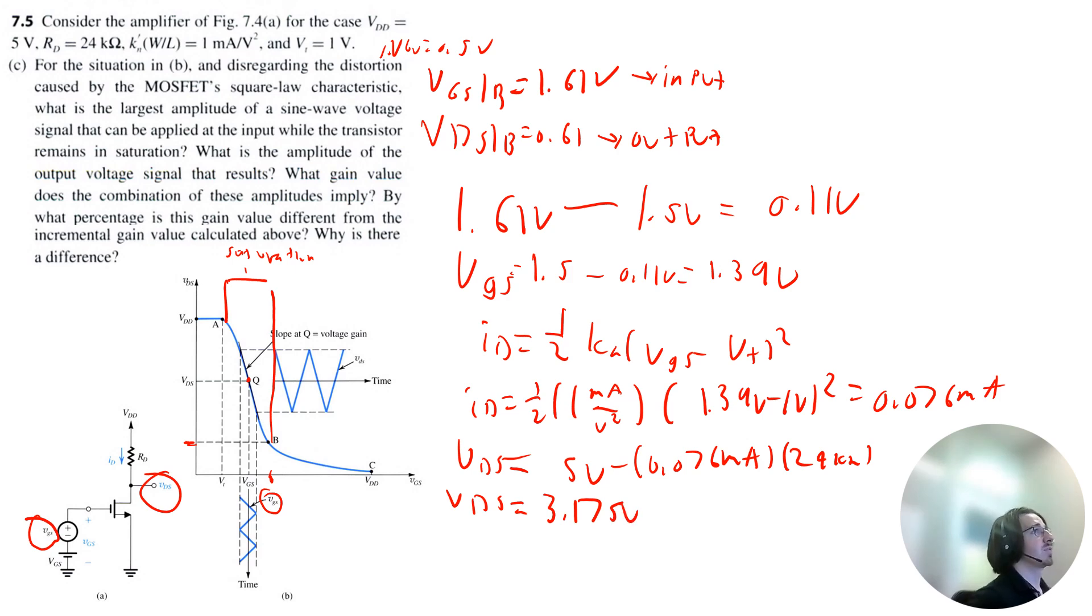And then the maximum VGS would be 1.61 volts. And VDS would be 0.61 volts. So therefore the largest signal gain AV max would be VDS minus this value VDS we calculated, 3.175 volts, divided by our original value of VGS minus the small signal component. And that is equal to negative 11.7 volts per volt.